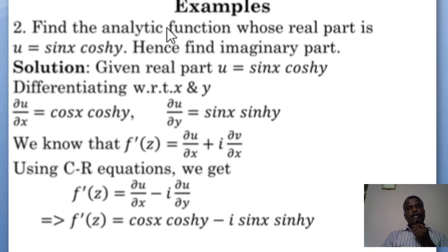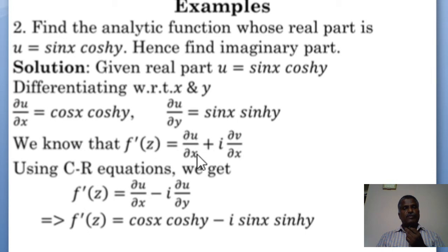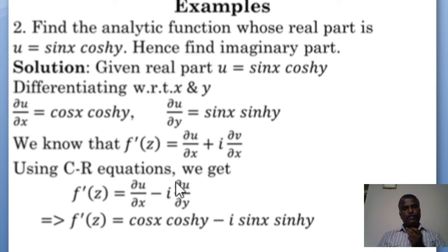Second example: find the analytic function whose real part is u = sin x cosh y, and hence find the imaginary part. Here u = sin x cosh y. Differentiating partially: ∂u/∂x = cos x cosh y, and ∂u/∂y = sin x sinh y. Since f(z) is analytic, using the Cauchy-Riemann equations we replace ∂v/∂x with −∂u/∂y. So f'(z) = cos x cosh y − i sin x sinh y.